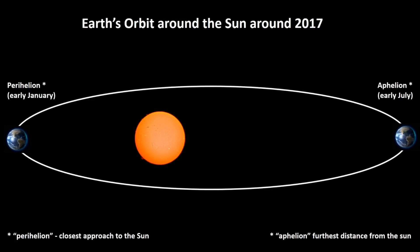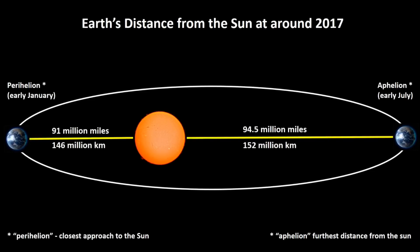Currently, the Earth is at its closest to the Sun in early January — the point known as the perihelion — at approximately 91 million miles (146 million kilometers). It is at its furthest distance in early July — the aphelion — at roughly 94.5 million miles (152 million kilometers).